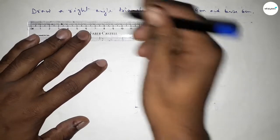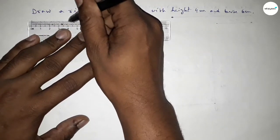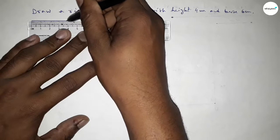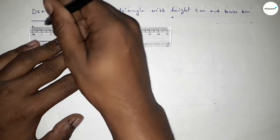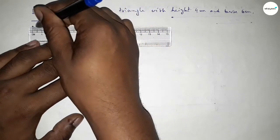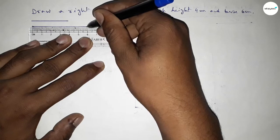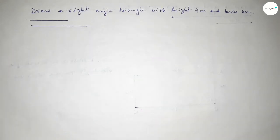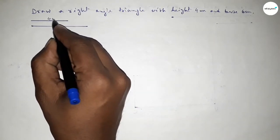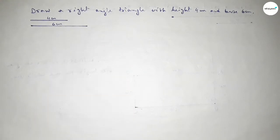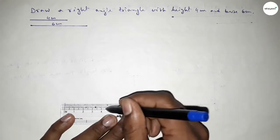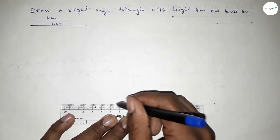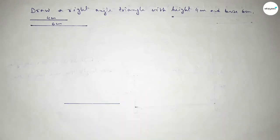First of all, we have to draw a line of length 4 centimeters and then another line of length 6 centimeters — starting from 0, this is 6. So we have a side of 4 centimeters and a side of 6 centimeters. This 6 centimeter line is the base of the right angle triangle, with point B on one end and point C on the other.